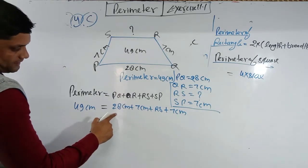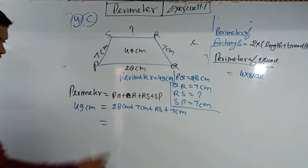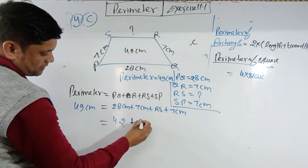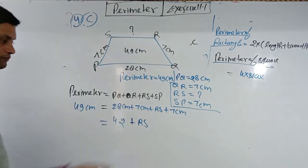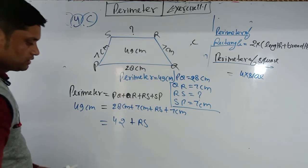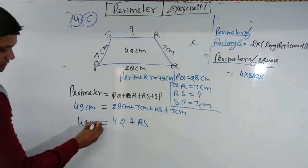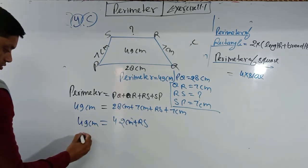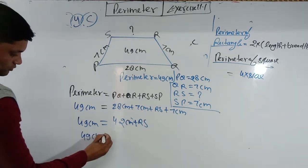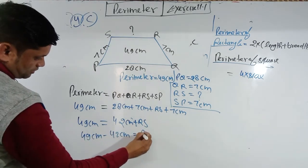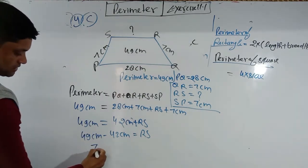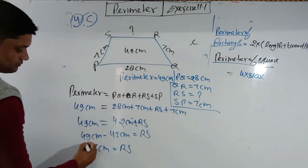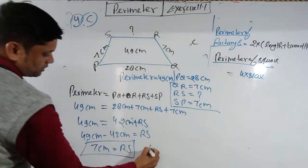So 49 = 28 + 7 + RS + 7. That gives 49 = 42 + RS. Therefore RS = 49 − 42 = 7 centimeters. That is your answer — easy!